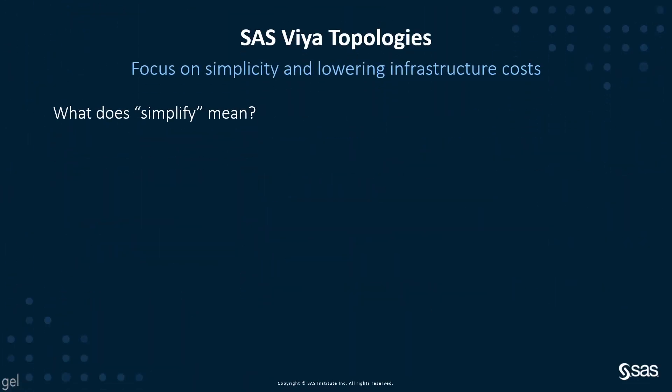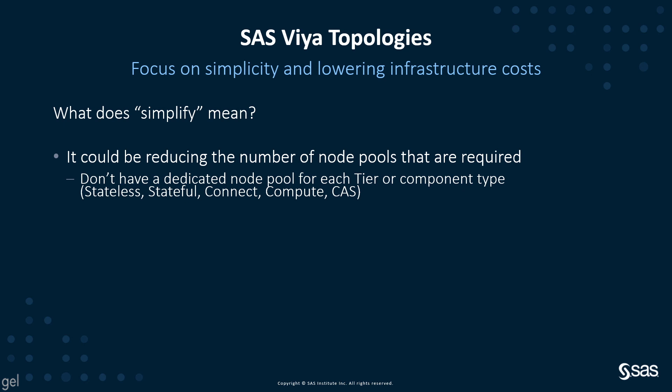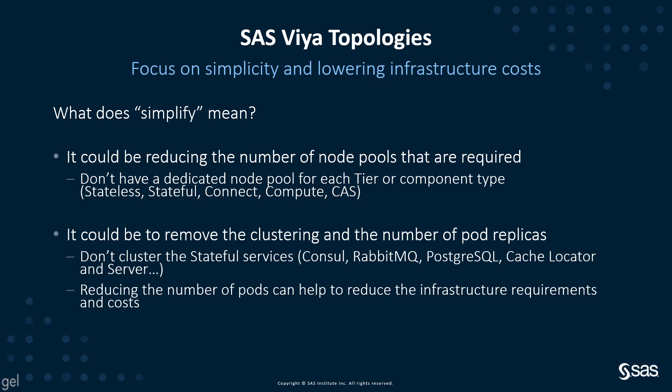With that in mind, what does simplifying the topology mean? Within this context, it could mean reducing the number of node pools required — you don't have to have a dedicated node pool for each tier or component type using the five default node pools. Or it could mean removing clustering and reducing the number of pod replicas required, so you don't cluster the stateful services. The default configuration has high availability configured for the stateful services, so reducing the number of pods can help reduce infrastructure requirements and hence costs.